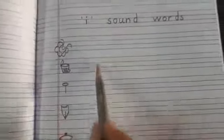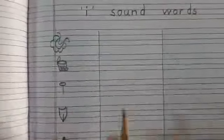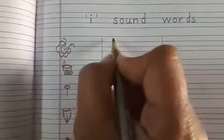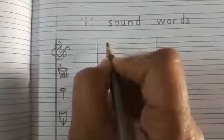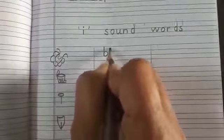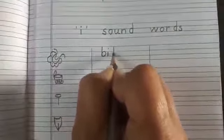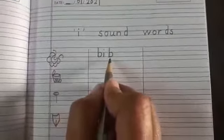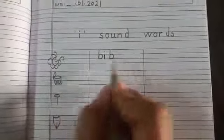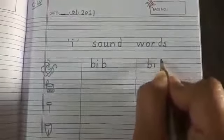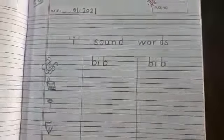With the help of a ruler we will draw two lines here. So here we will write down the spelling of bib. B-I-B. Speak and write: B-I-B, B-E-B. Bib. The sound of I is E. B-I-B. Bib.